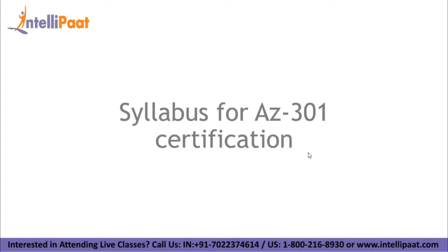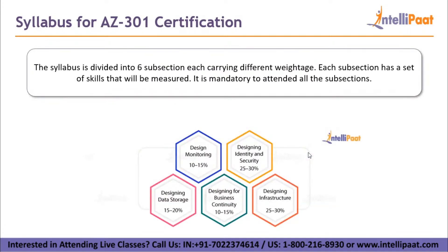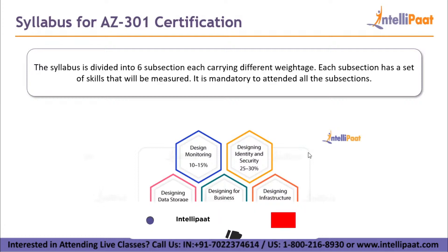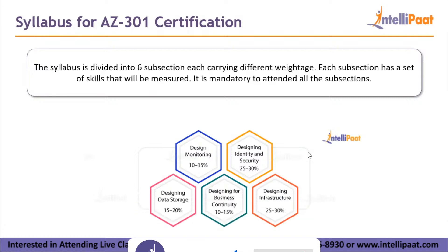The last topic is the syllabus for AZ-301 certification. The total time duration can vary from 150 to 180 minutes. The number of questions can range from 40 to 60. The exam fee is 165 dollars. Question types include MCQ, hot areas, drag and drop, list active areas, and case studies. The syllabus is divided into six subsections, each carrying different weightage and a set of skills to be measured. It is mandatory to attend all subsections.